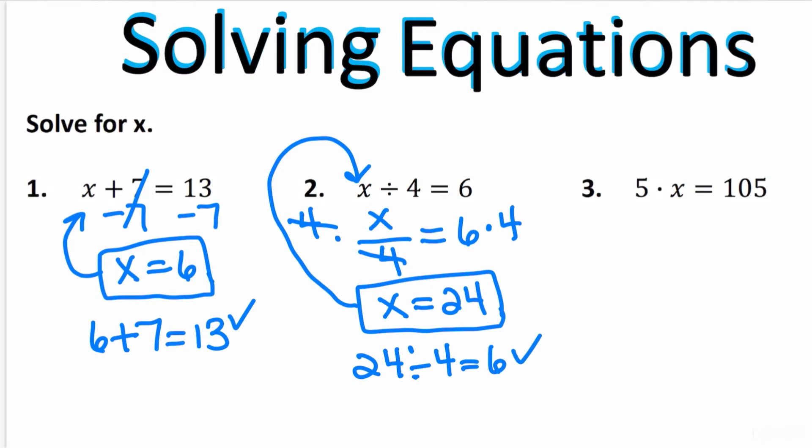Number three, 5 times some number x is equal to 105. The opposite of multiplying is dividing. I will divide both sides by 5. You always divide by the number next to the variable, in which case this is 5 right now. So x is going to equal 21. If I substitute, 5 times 21 gives me 105.